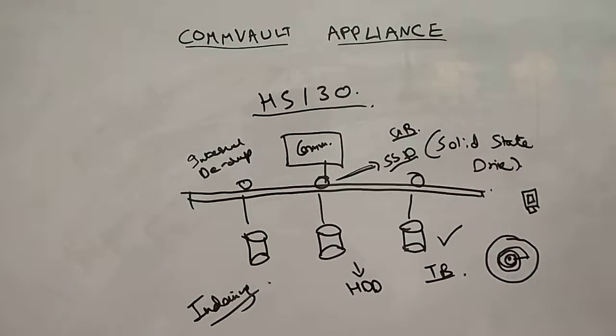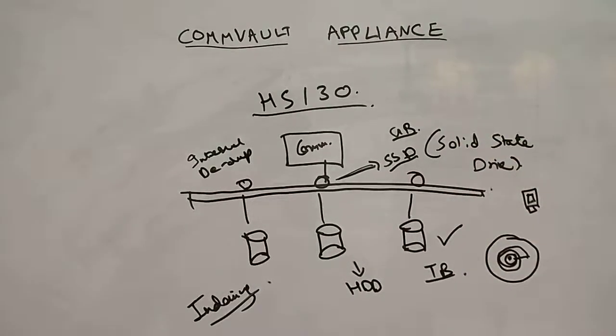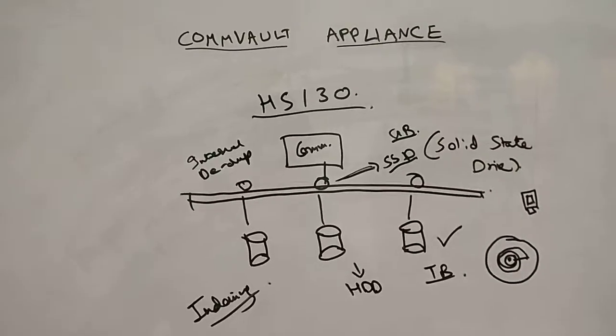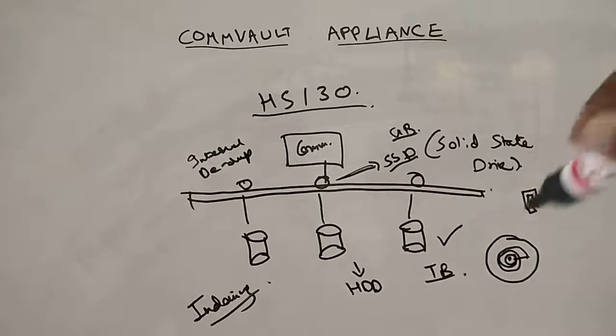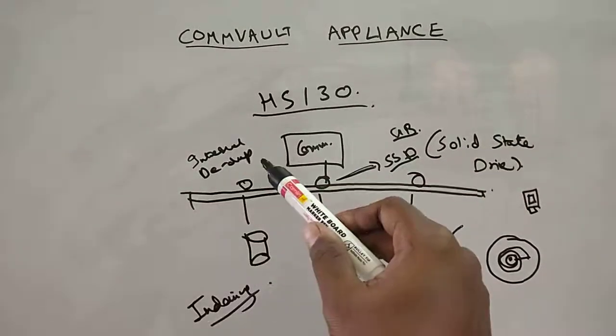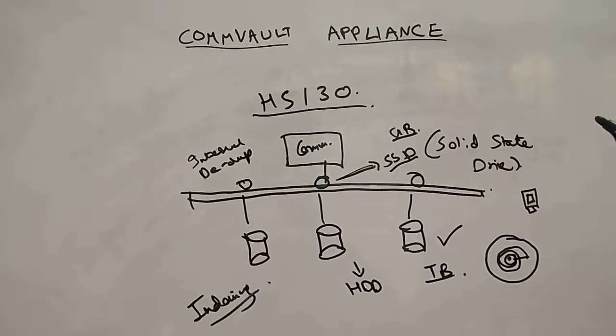Indexing is basically noting down what all data is where. It's simply like your first page of a novel where you know all the pages, what all pages have what all content. In a novel, the first page is all about indexing - chapter one is on this page, chapter three is on that page. That's indexing.